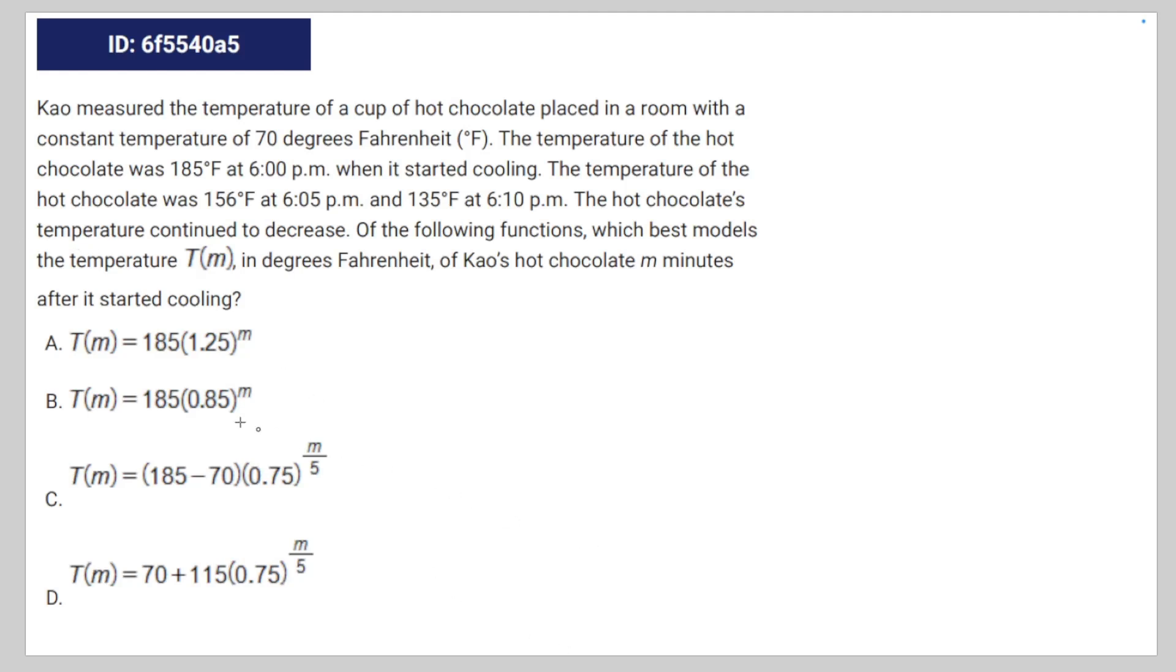Okay, we have this math question. Cal measured the temperature of a cup of hot chocolate placed in a room with a constant temperature of 70 degrees Fahrenheit. The temperature of the chocolate was 185°F at 6 p.m. when it started cooling, the temperature of the hot chocolate was 156°F at 6:05, and 135°F at 6:10. The hot chocolate's temperature continued to decrease. Of the following functions, which best models the temperature T(m) in degrees Fahrenheit of Cal's hot chocolate m minutes after it started cooling?